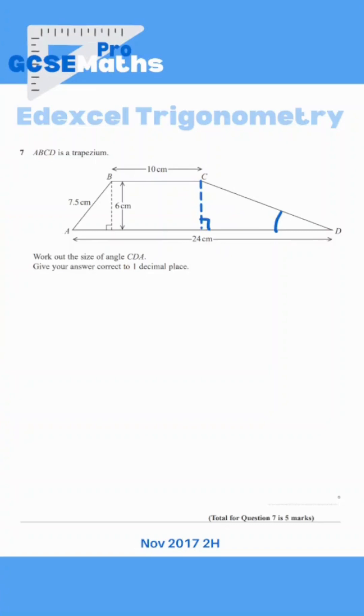In order to find an angle using trigonometry, we need to know two sides of this triangle over here. Currently, we already know that the height is 6 because of this rectangle in the middle, but I also therefore want to know the base.